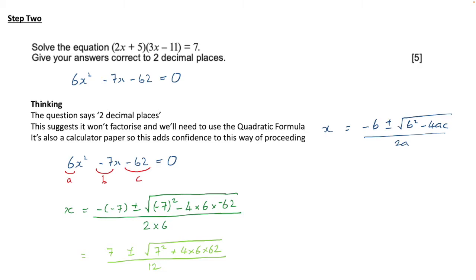Minus 7 squared is the same as 7 squared because the minus will multiply away. And then we can see that for that last little bit we've got minus 4 times 6 times minus 62. So that turns into a plus. And by doing that step it's not essential but it does mean that you can enter it accurately into the calculator.